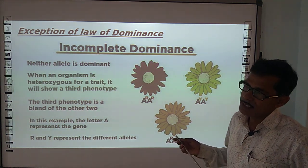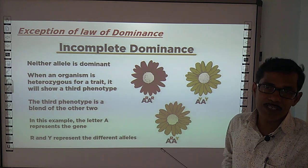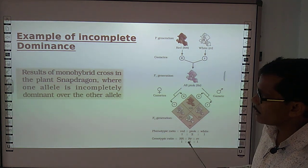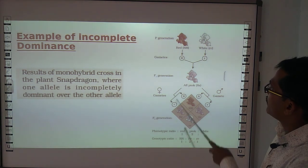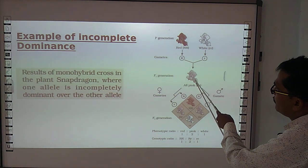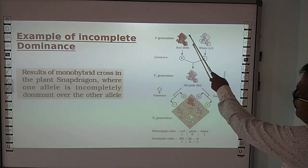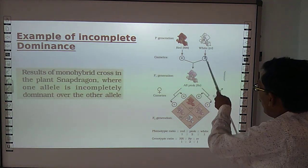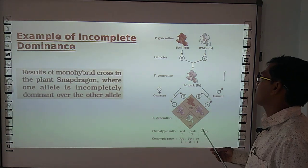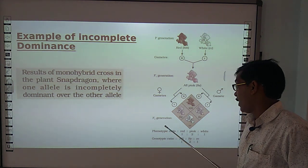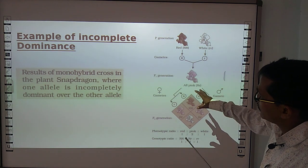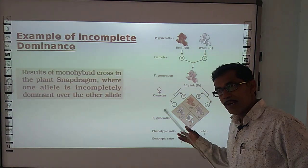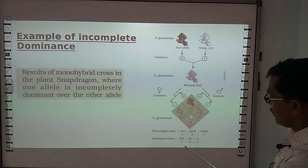In incomplete dominance, blending does occur in the F1 generation. The best example is the snapdragon, also called four o'clock plants. This is a monohybrid cross. When we cross red and white plants, in the F1 generation, neither red nor white is expressed — but intermediate traits are seen. All plants' flowers were pink in the F1 generation, indicating incomplete dominance and blending.